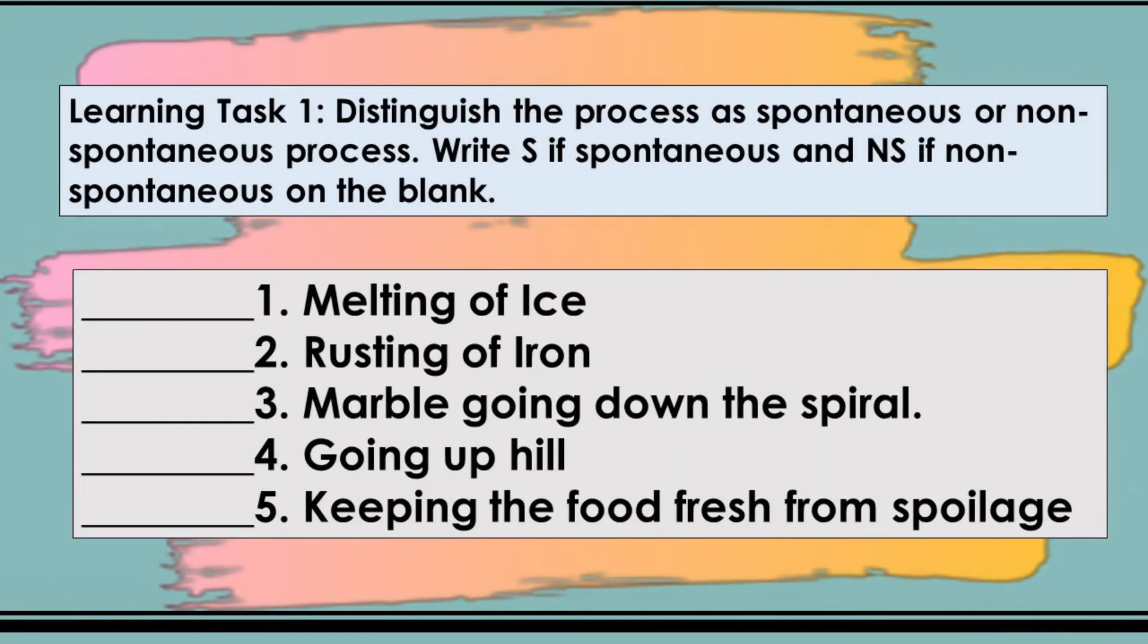At this point, let us see what you have learned from our discussion by answering learning task 1. Distinguish the process as spontaneous or non-spontaneous process. Write S if spontaneous and NS if non-spontaneous on the blank. Number 1. Melting of ice. Number 2. Rusting of iron. Number 3. Marble going down the spiral. Number 4. Going uphill. And number 5. Keeping the food fresh from spoilage.